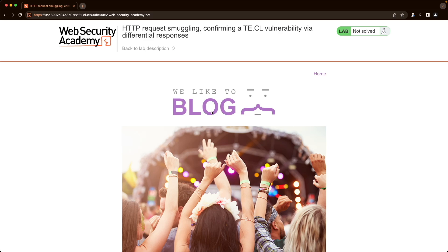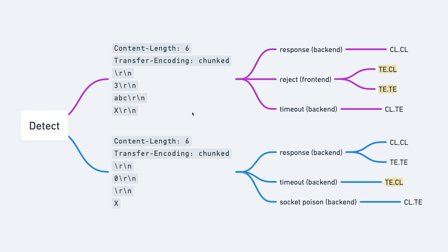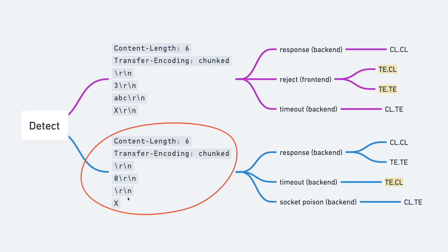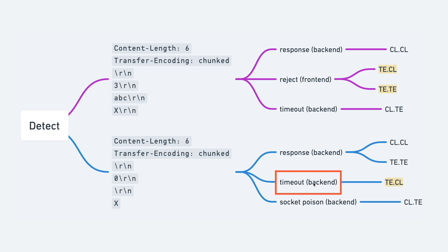The application in this lab is vulnerable to a TECL attack. We'll first detect the TECL vulnerability using a timing technique. We're using two payloads: first, a request that — if the frontend rejects it — confirms the frontend is using transfer-encoding chunked. Then a second request that, if it times out, confirms the backend is using content-length, which is a strong indication this endpoint is vulnerable to a TECL attack.